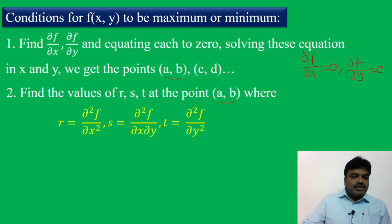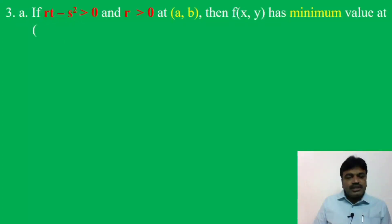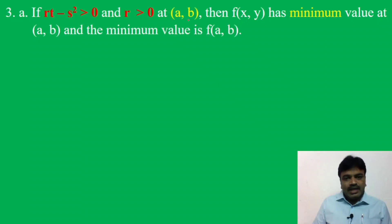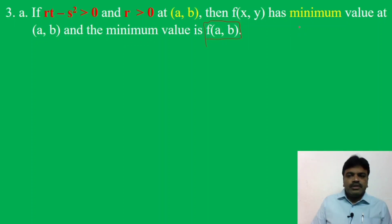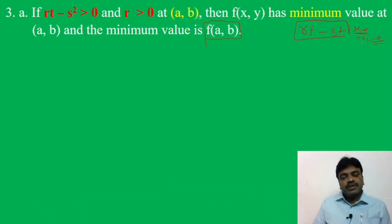Third step determines whether it is maximum or minimum. Condition 3a: if rt minus s square is greater than 0 and r is greater than 0 at (a,b), then f(x,y) has a minimum value at (a,b), and the minimum value is f(a,b). The key quantity to remember is rt minus s square.